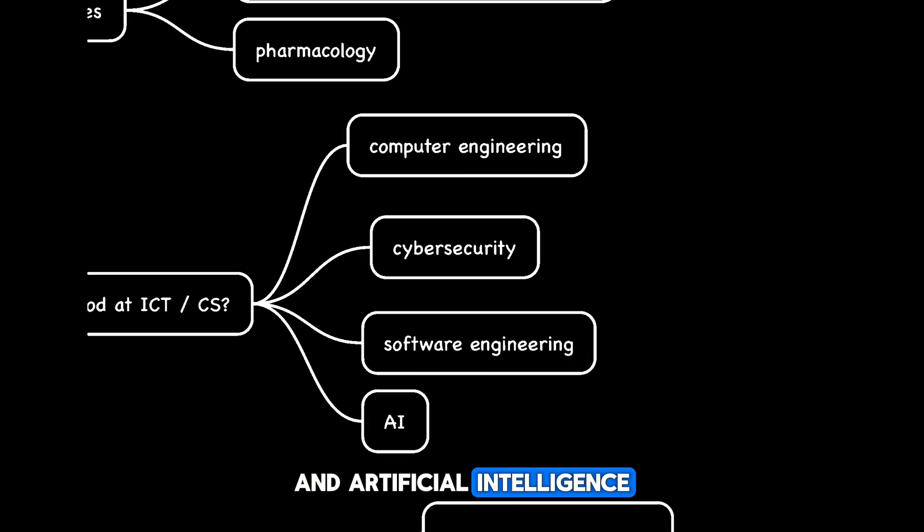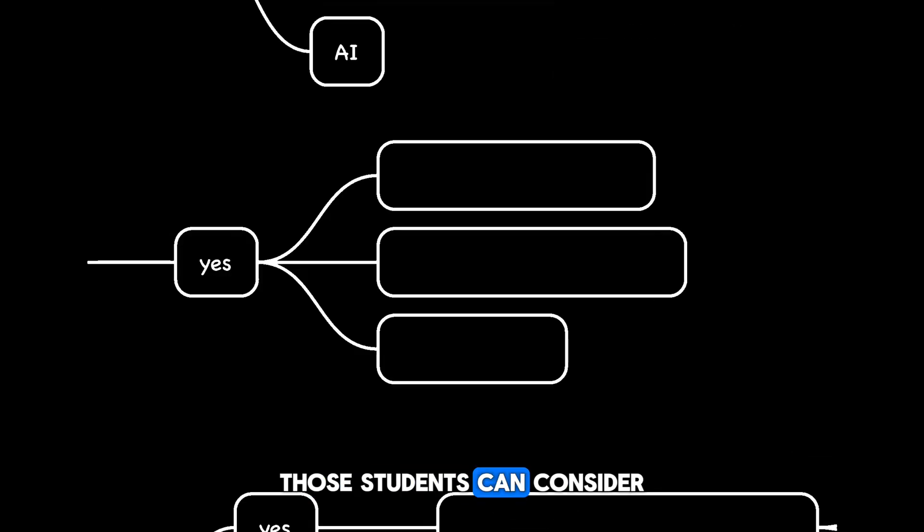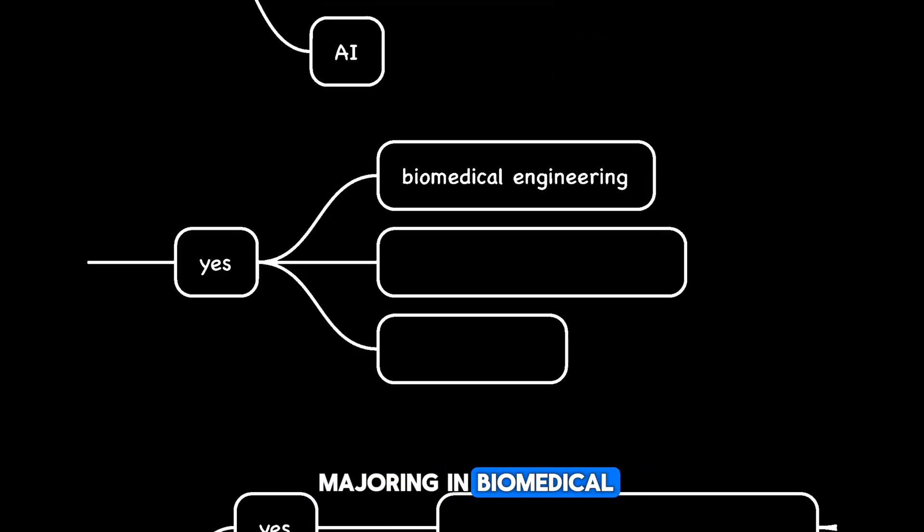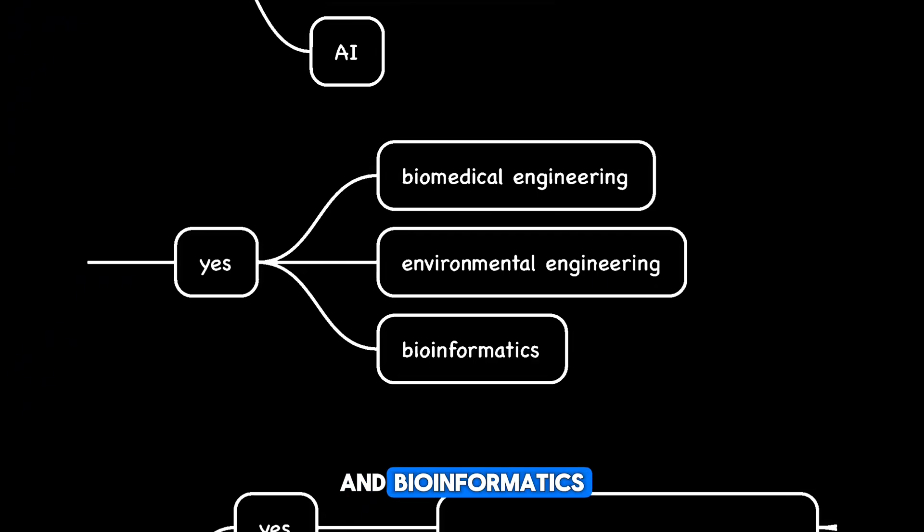There are also students who are good at both maths and biology. Those students can consider majoring in biomedical engineering, environmental engineering, and bioinformatics.